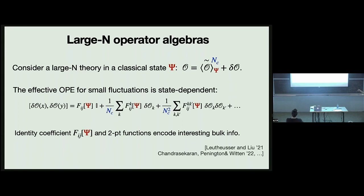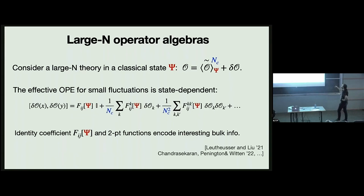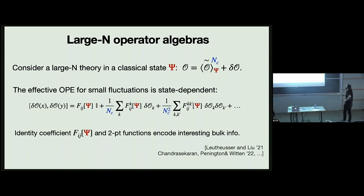This is an interesting idea to consider small fluctuations around the classical state. If you have expectation values of order M like one over h-bar, look at small fluctuations. This gives an interesting way of packaging the OPE which depends on the state you're expanding around. A particularly interesting thing is the ocean of identity, which you can think of as two-point functions of small fluctuations. There's a lot of information in that object, and by decoding it properly we can understand something in the bulk closely related to heavy-heavy-light-light correlators in conformal field theory. This is not what I will discuss today.